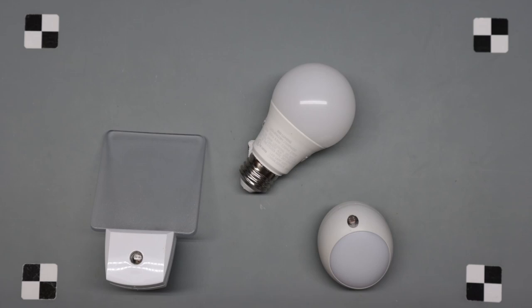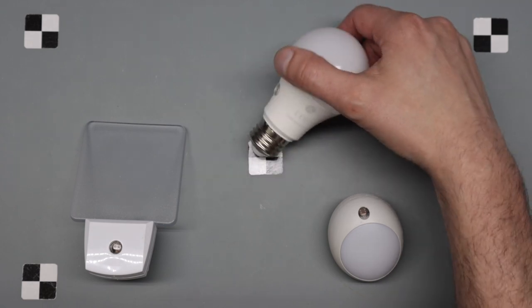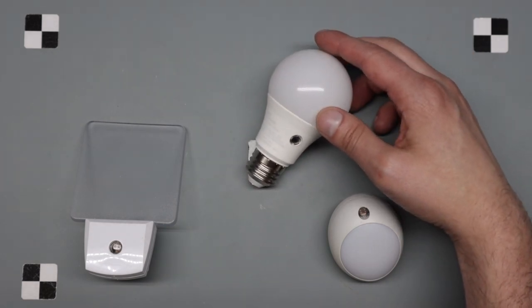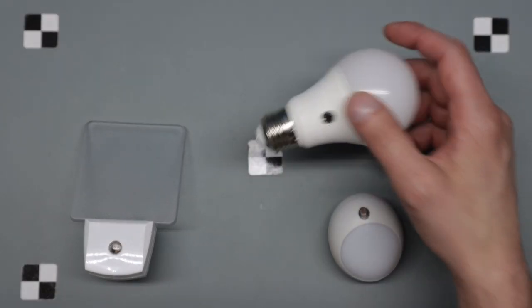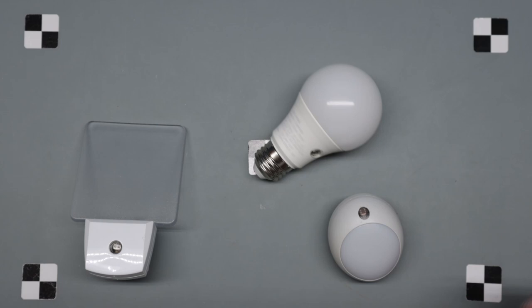Okay, so I had three similar items. Two of them are nightlights, one's an outdoor light, but they're all using a photoresistor for dusk to dawn or night light type activities. So I'm going to do all three of them in one video.